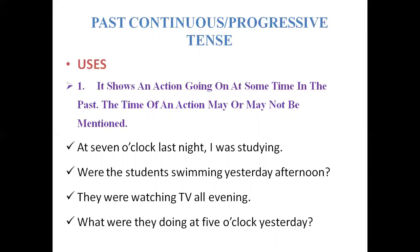Focus on these four examples. 'It's 7 o'clock — last night I was studying.' 'I was reading at 7 o'clock.' 'Were the students swimming yesterday afternoon?' 'They were watching TV all evening.' 'What were they doing at 5 o'clock yesterday?' So they are showing the time, showing the activity, showing the longer action. If we want to use individual past continuous, we use time markers. Otherwise, in tests we check past simple or both sides as past continuous, which we will discuss in the next slides.